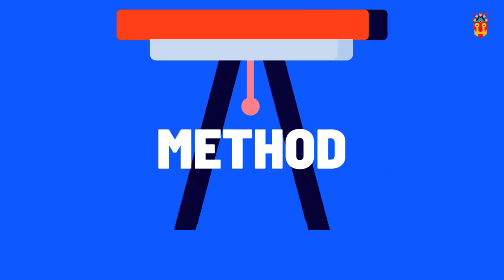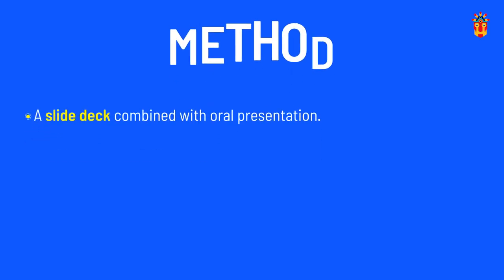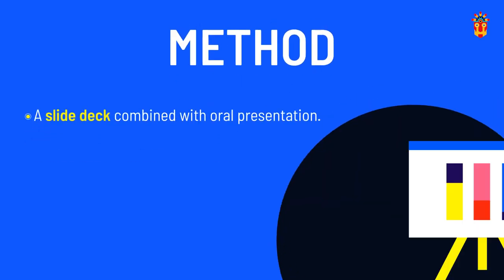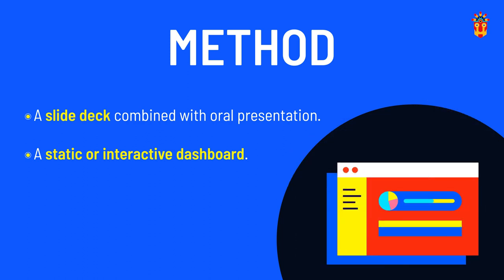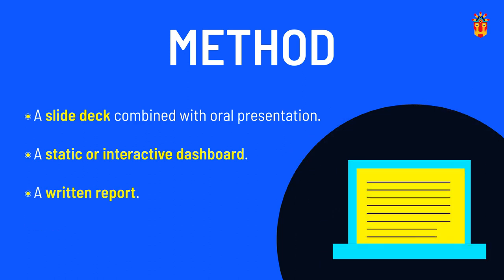The last prerequisite is to have agreed on the method. This is basically the form of the visualization — how the audience will see the message as an end result. Typical examples here are slide decks combined with an oral presentation, a static or interactive dashboard or chart, or even a written report.